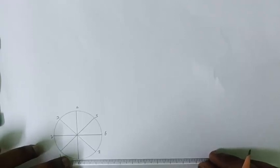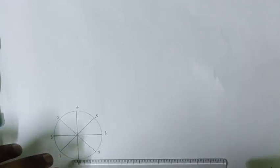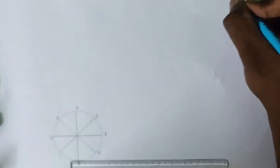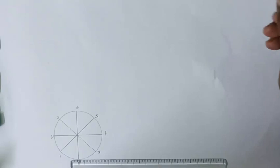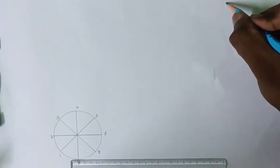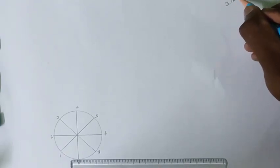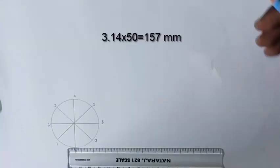And then draw a line at the base of the circle by having its perimeter at length. The diameter of the circle is 50 mm, so the perimeter should be 3.14 into 50, that is 157 mm.